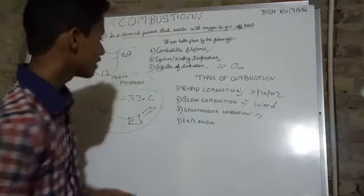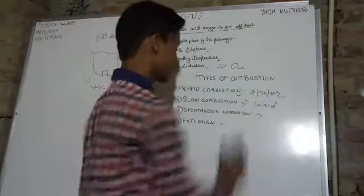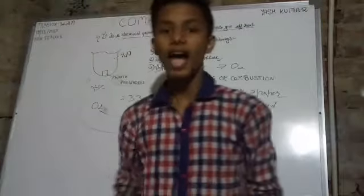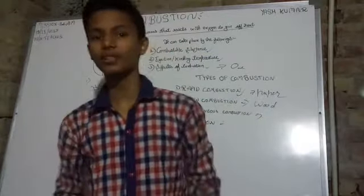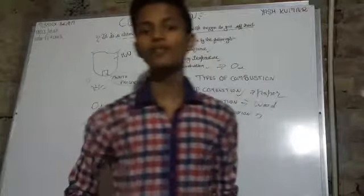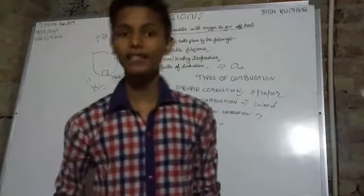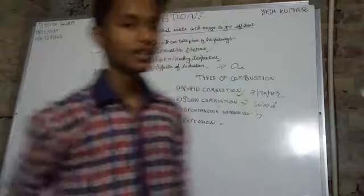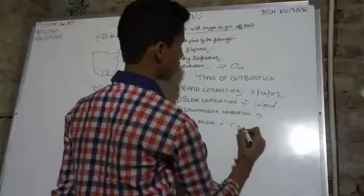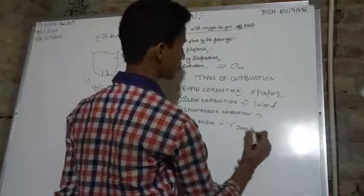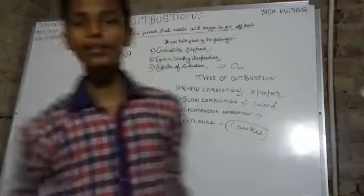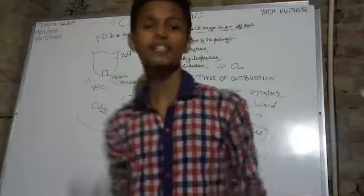The fourth type is explosion. In an explosion, everything is produced in very large amounts — heat is produced in a very large amount, gas is produced in a very large amount, and sound is also produced in a very large amount. An example is crackers, which are an example of explosion.